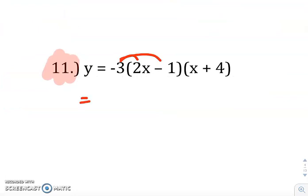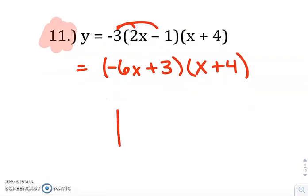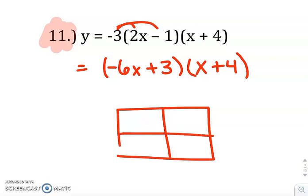So negative 3 times 2x is negative 6x. Negative 3 times negative 1 will be positive 3. Still times x plus 4. So you're ready for that generic rectangle. Negative 6x positive 3. Positive x positive 4. So negative 6x times x, negative 6x squared.